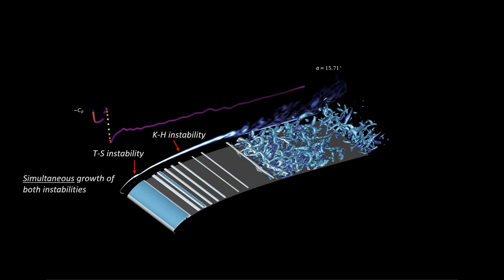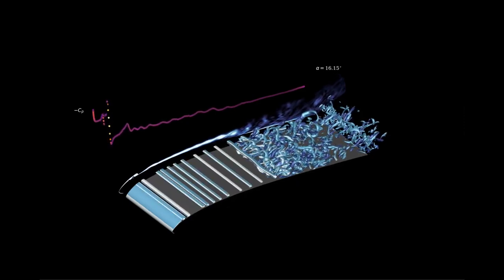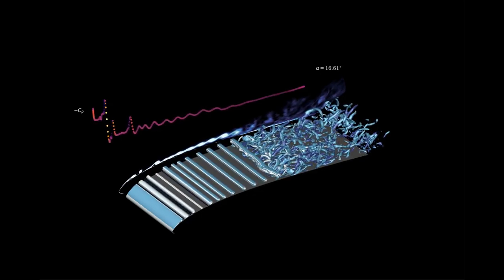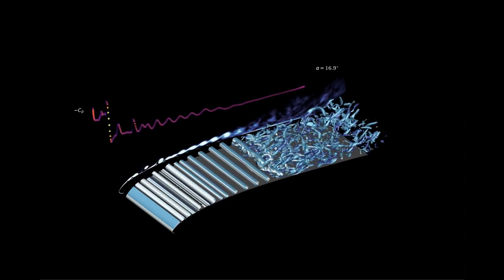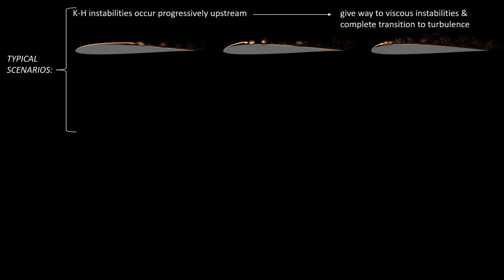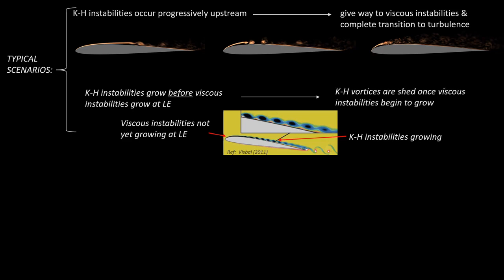The next few instances show the simultaneous growth of both instabilities. Typically, unsteady stall cases exhibit dominance of one instability mode over the other rather than the concurrent growth of both. The initial Kelvin-Helmholtz instabilities occur progressively upstream but give way to viscous instabilities which lead to complete transition to turbulence. Alternately, the KH instabilities grow before viscous instabilities grow at the leading edge, but the shear layer vortices are shed as soon as the viscous instabilities begin to grow.